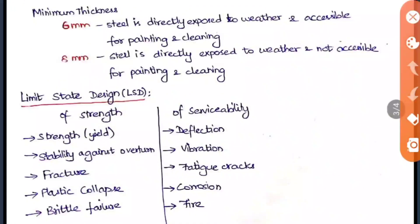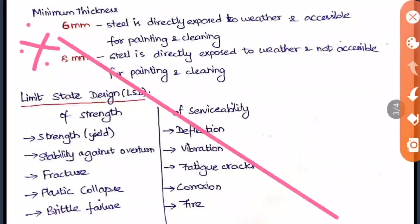The minimum thickness based on the working stress method: when steel is directly exposed to weather and accessible for painting and cleaning, minimum thickness is 6 mm. When directly exposed to weather but not accessible for painting and cleaning, minimum thickness is 8 mm.